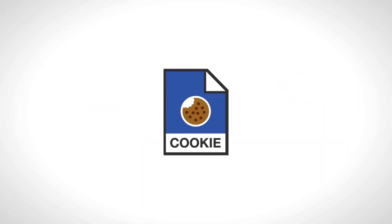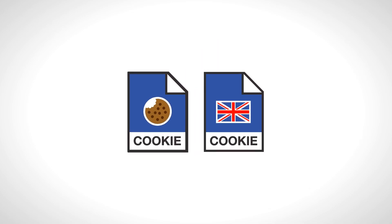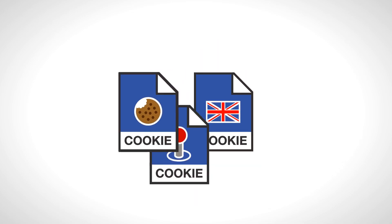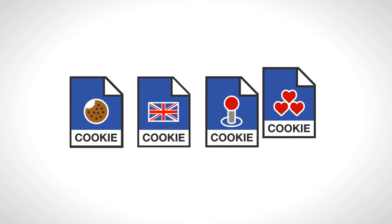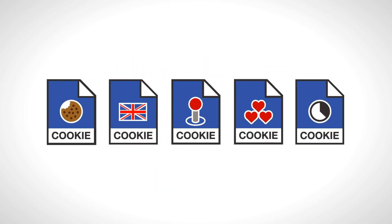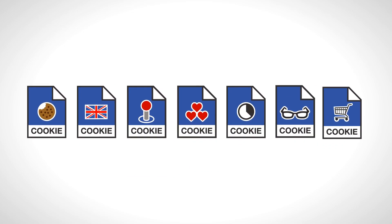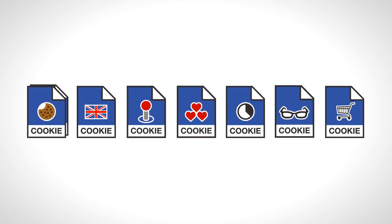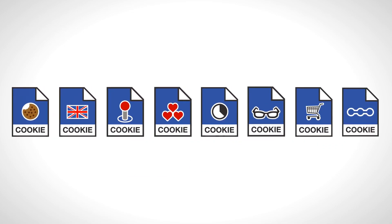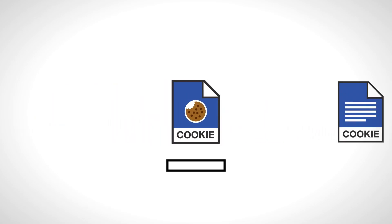Pretty handy, huh? But cookies are not limited to remembering just your language. In fact, a cookie can contain pretty much any kind of information. It can contain the time you visited a website, or it can contain the items you added to your shopping basket. It can even contain all the links you clicked on a certain website, much like leaving a breadcrumb trail on the internet.